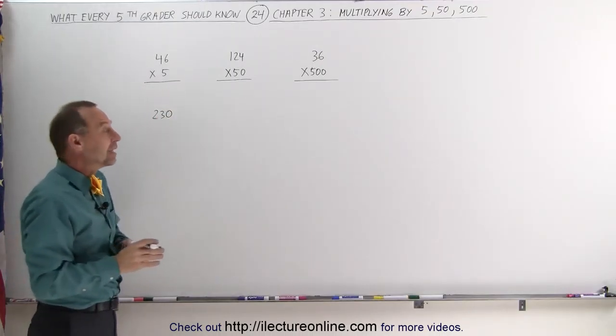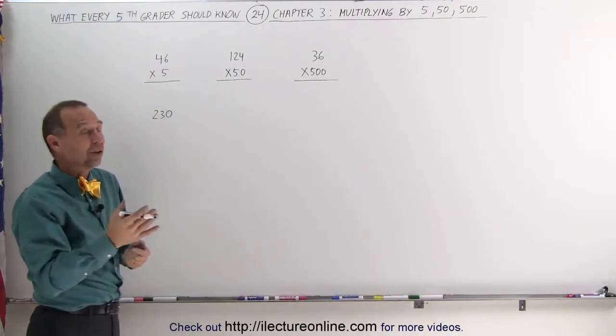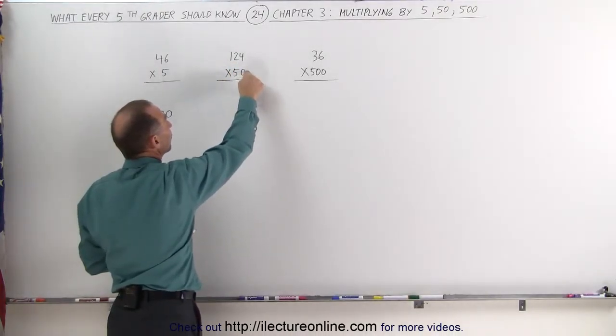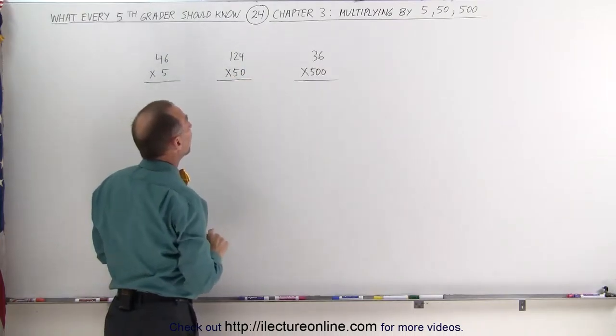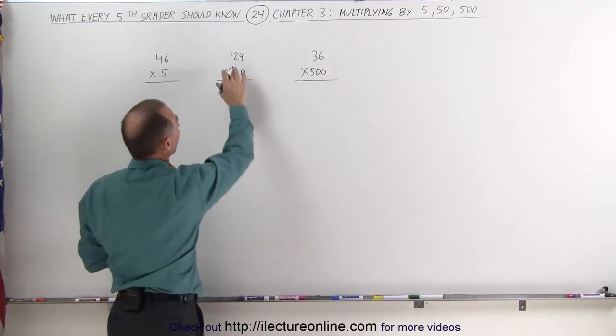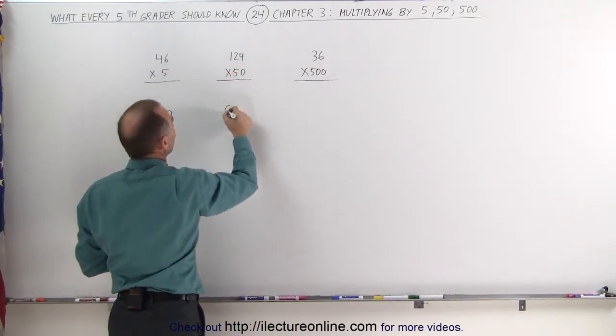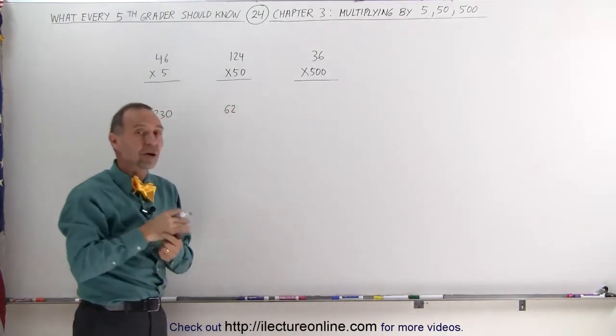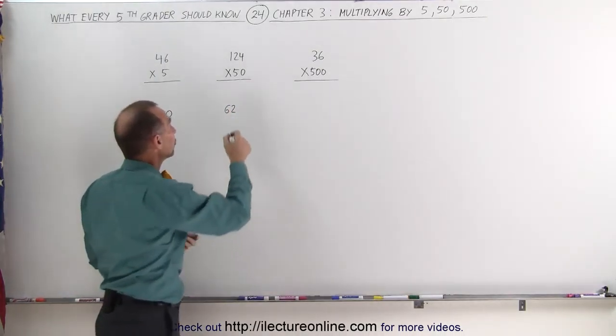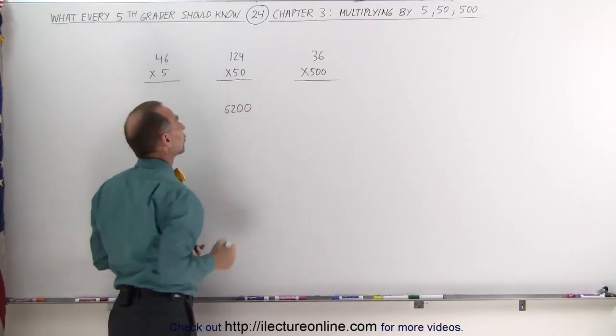When the number is 50, then we just have to add one more zero. For example, 124 times 50, we first divide 124 by 2. 124 divided by 2 is 62, and now we multiply times 100, twice 50. That's like adding two zeros, you get 6,200.